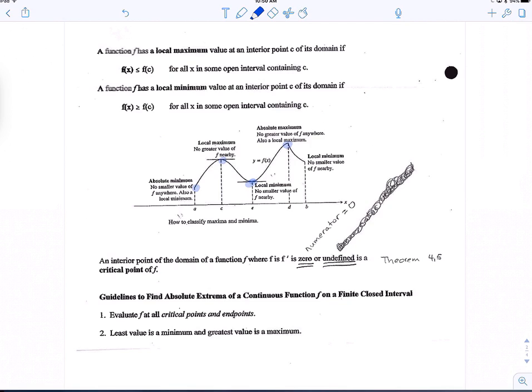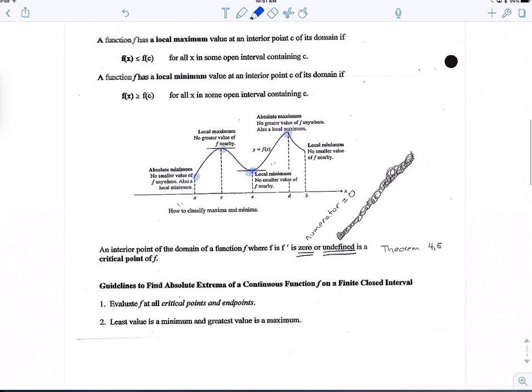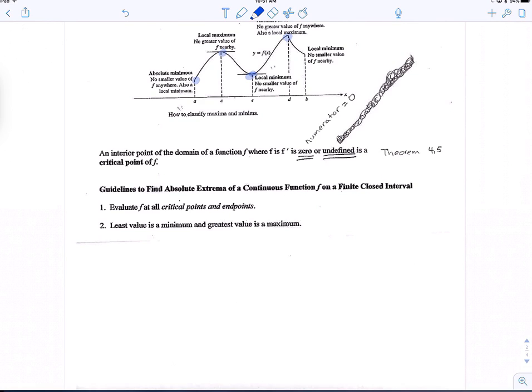So then the comment is, an interior point of the domain of a function f, where f prime is 0, is a critical point of f. So what we're going to do is we're going to start working with these critical points. And to find critical points, we're going to evaluate the first derivative equal to 0. And so just to give some guidelines here, you can see we have listed guidelines to find the absolute extrema of a continuous function on a finite closed interval. So we're assuming continuous in all these cases.